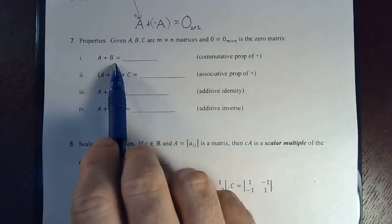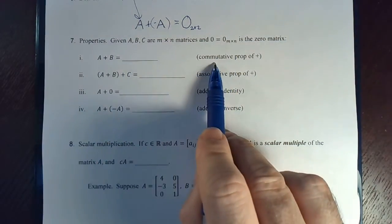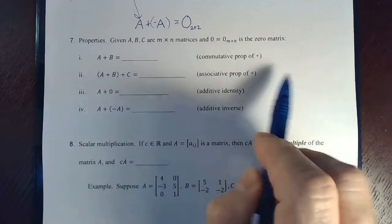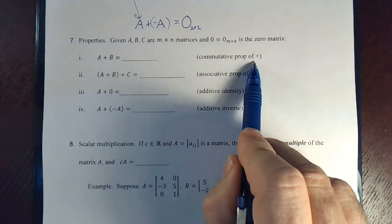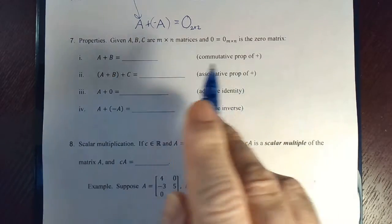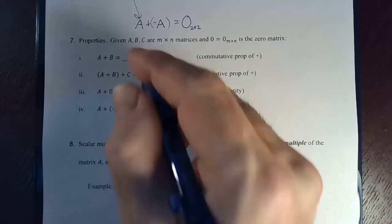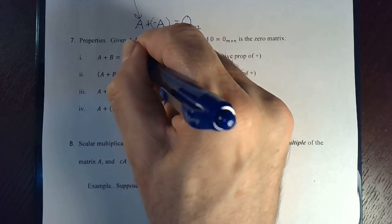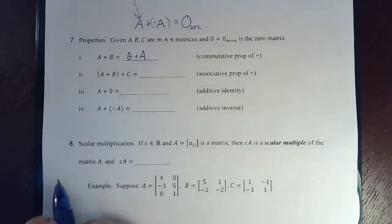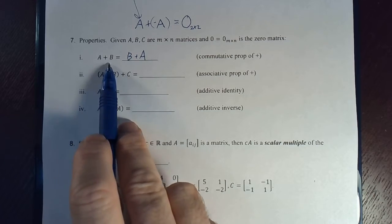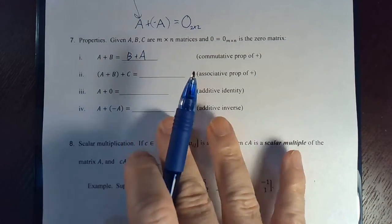Then A plus B is equal to what? The commutative property of addition. What would that be? Remember, a commutative says that 2 plus 3 equals 3 plus 2. The order doesn't matter. Well, the same thing for matrices. You can add them in this order, A plus B or B plus A. You're going to get the same result.